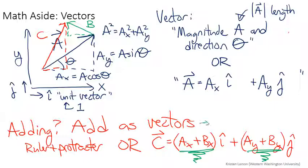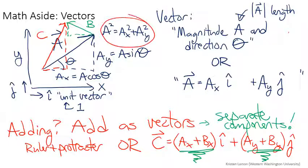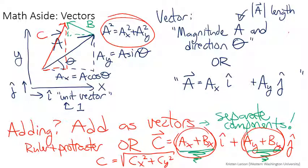Add as vectors means separate components, add those separately. If you really want to find the magnitude of the sum, then you can just use the Pythagorean theorem and get that C, the magnitude of C, is the square root of Cx squared plus Cy squared. But you've found those by adding just the components. So a little bit of trig can save you a lot of heartache. Separate the components with trig, add them separately, and then recombine.